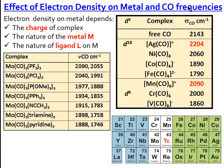CO frequencies depend on the electron density of the metal, and the electron density on the metal depends on three factors: (1) the charge of the complex — cationic, anionic, or neutral; (2) the nature of the metal M — whether M is rich or poor in electrons by nature; and (3) the nature of the ligands on M — whether L is a donor or acceptor of electrons.